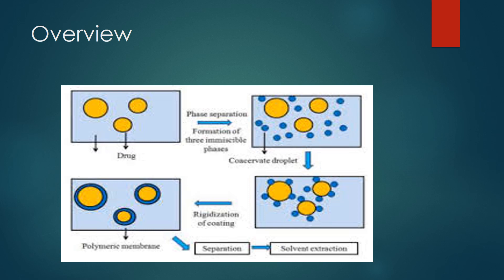This is an overview of how coacervation phase separation works. As you can see, the yellow dots represent the drug particles suspended in a polymeric solution in the first rectangle. Because of any of the techniques, the polymer from the solution will come out — shown as small blue circles in the second rectangle, representing the polymer separating out from the solution. That polymer is then deposited on the drug particles, shown in diagram three, where the drug particles are coated with small polymer circles.